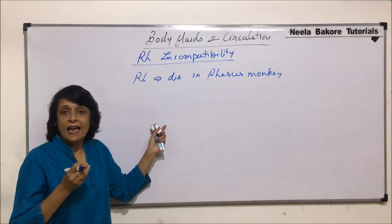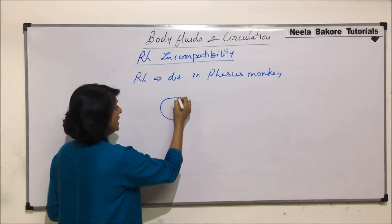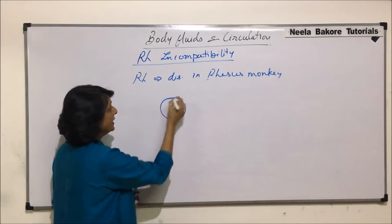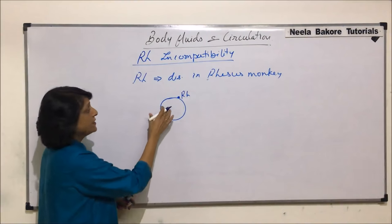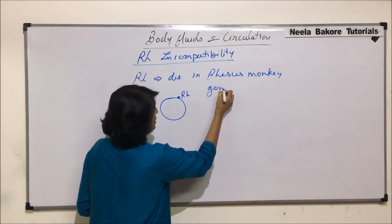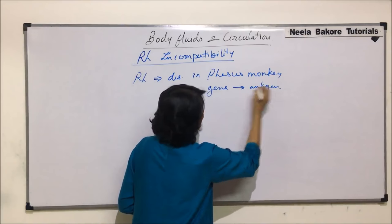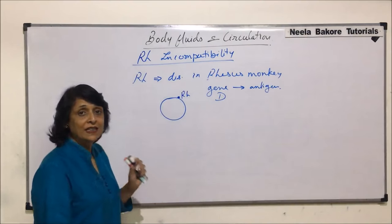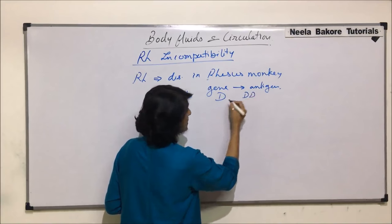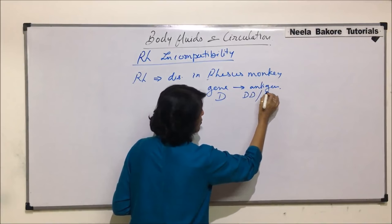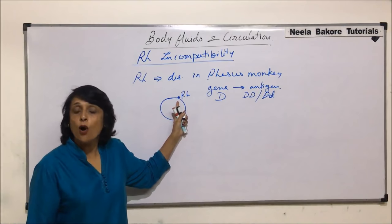RH is actually referring to a protein. On the RBC, if there is a protein known as the RH factor, it is controlled by a gene. There is a gene which produces an antigen and this is represented by capital D. If a person has a homozygous or heterozygous condition, they would produce this antigen on the RBC.